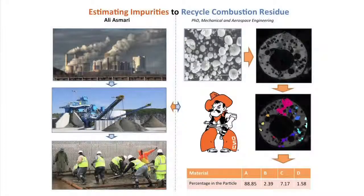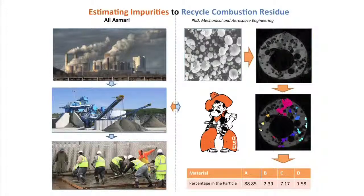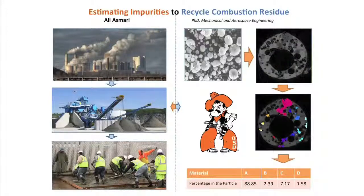Up on the right is a grayscale image that we get. My personal expertise is doing image processing in computer vision. Using image processing algorithms, I designed a program that helps the computer analyze and segment all the impurities in this image. In the left-middle image, you will see that different regions of impurities are shown with different colors. The computer does this analysis on different segments of the particle and adds them up.